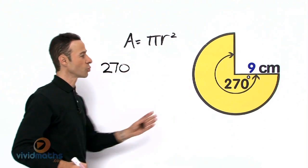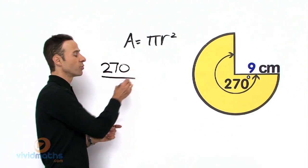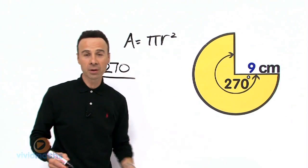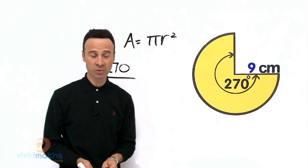So 270 degrees is what we have here, that is the yellow part of what was originally the whole thing, and that was 360, the angle for the whole circle.